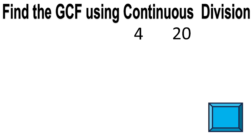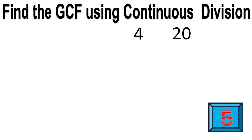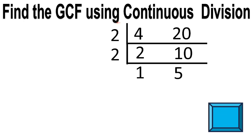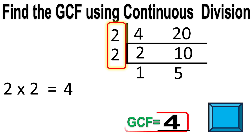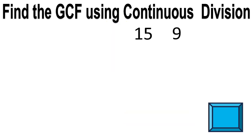Another: 4 and 20. The answer is 2 times 2 equals 4. The greatest common factor is 4.